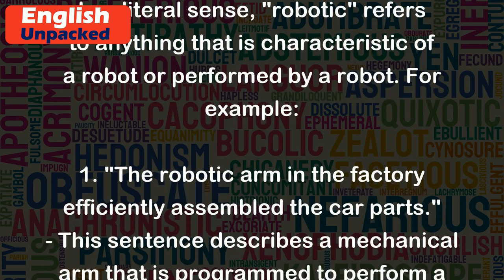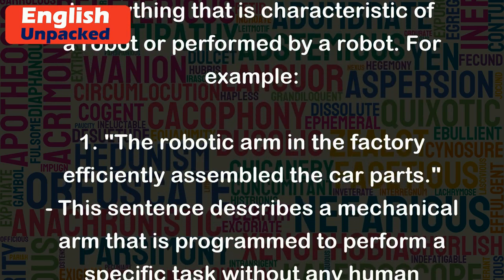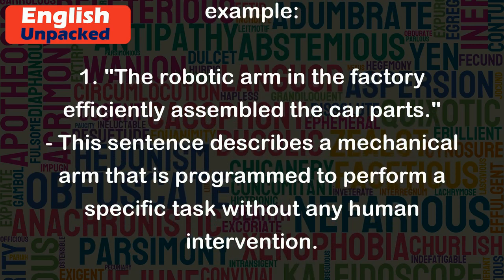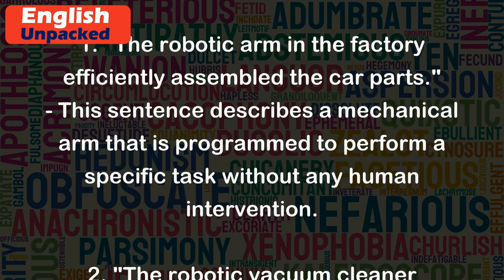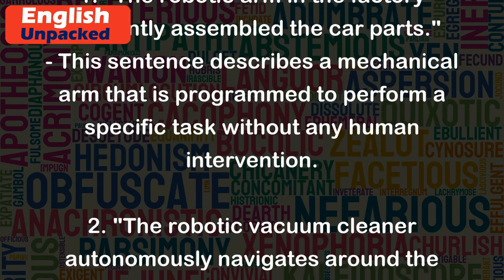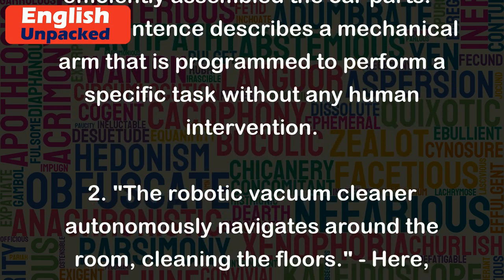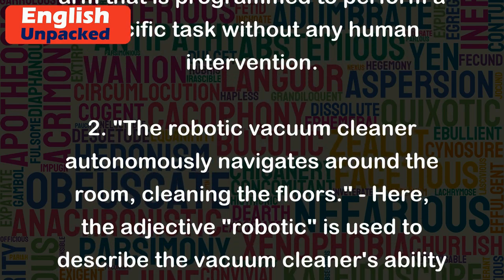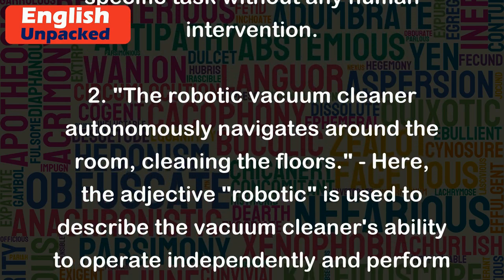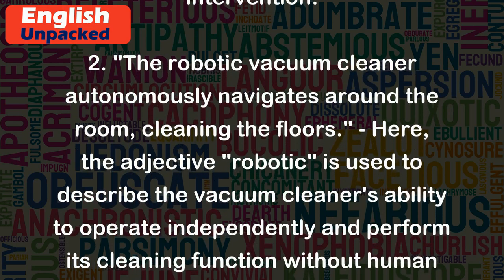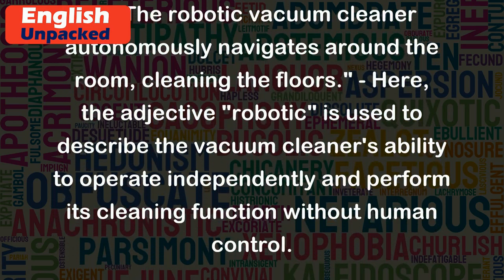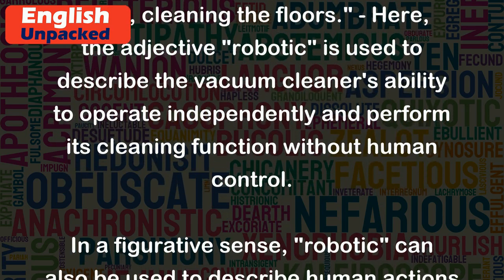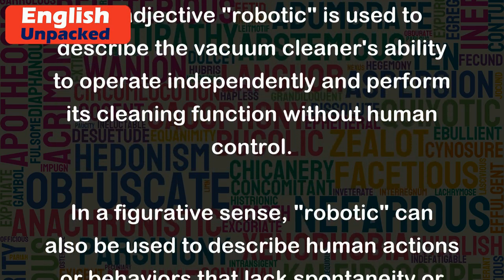For example: 1. The robotic arm in the factory efficiently assembled the car parts. This sentence describes a mechanical arm that is programmed to perform a specific task without any human intervention. 2. The robotic vacuum cleaner autonomously navigates around the room, cleaning the floors. Here, the adjective 'robotic' is used to describe the vacuum cleaner's ability to operate independently and perform its cleaning function without human control.